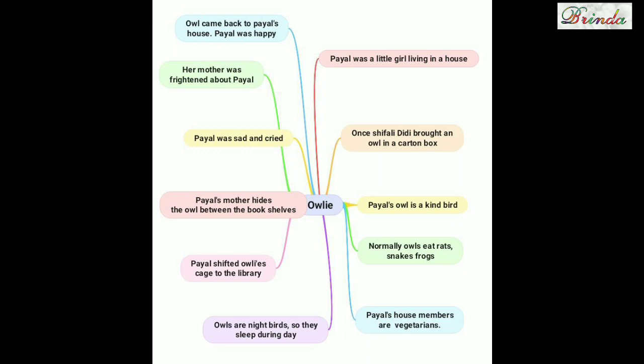Once, Payal shifted Owly's cage to the library. Payal's mother hid the owl inside the bookshelves. Payal was sad and cried. Her mother was frightened about Payal. The owl came back to Payal's house, so Payal was happy. Fine, children.